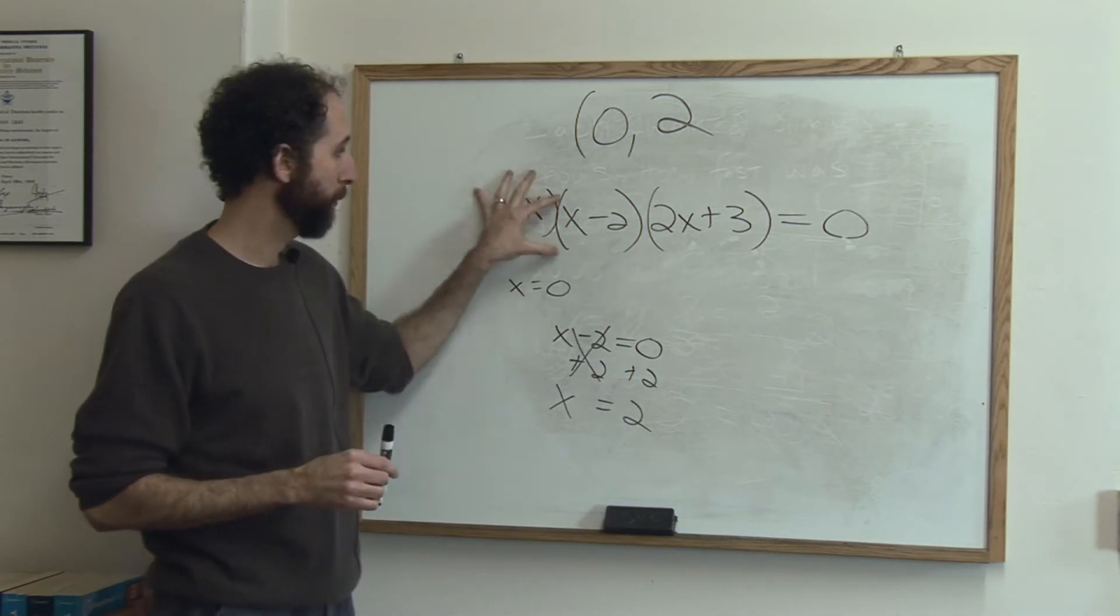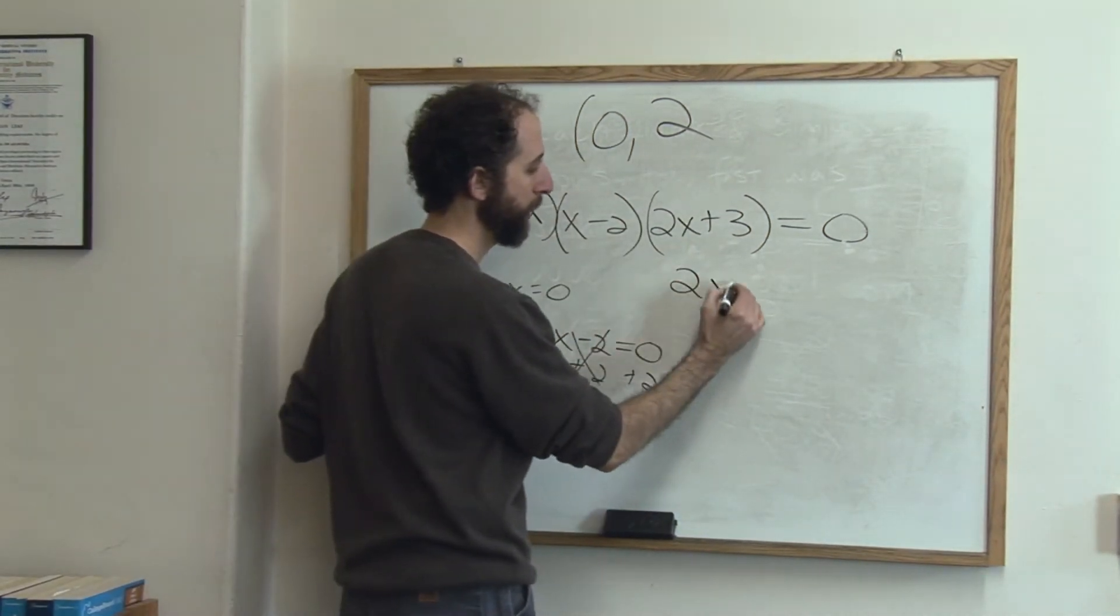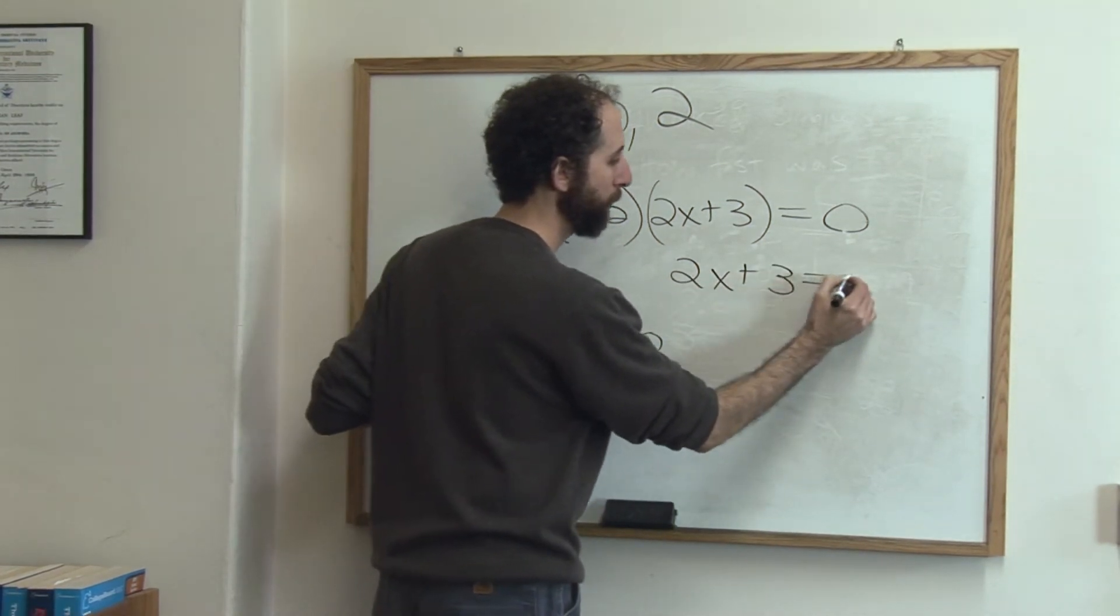Third answer, there's going to be three answers here. One, two, three. Third answer is you set this equal to zero. Two x plus three equals zero.